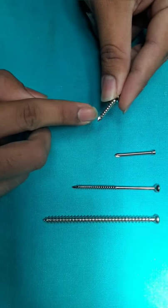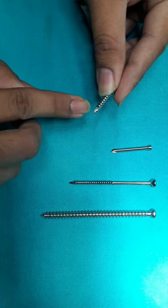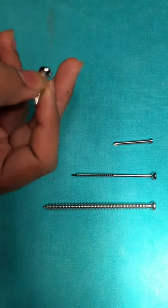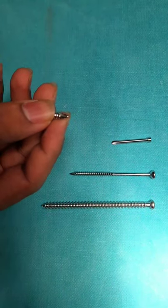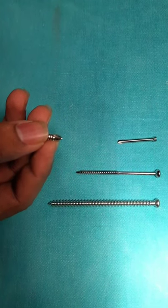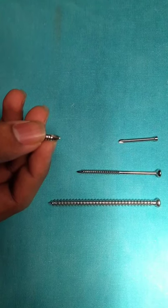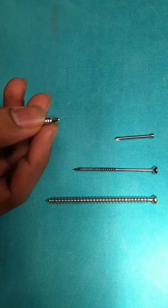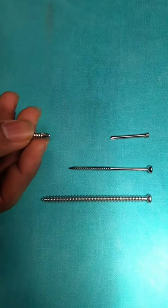This is a self-tapping tip where there is a flute in it. It cuts threads into the bone as the screw advances. Self-tapping screws need a pilot hole. The length of the screw should be selected so that the entire flute segment protrudes beyond the distal cortex.